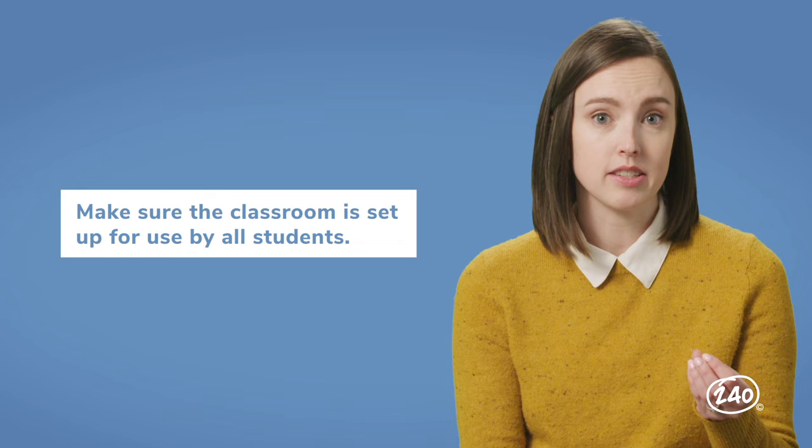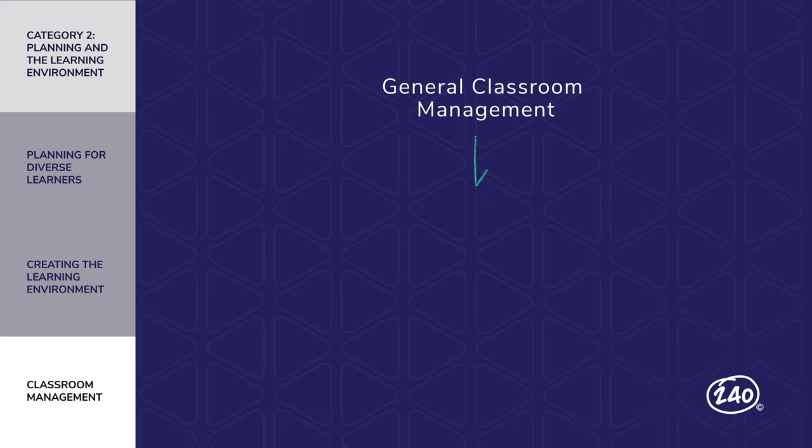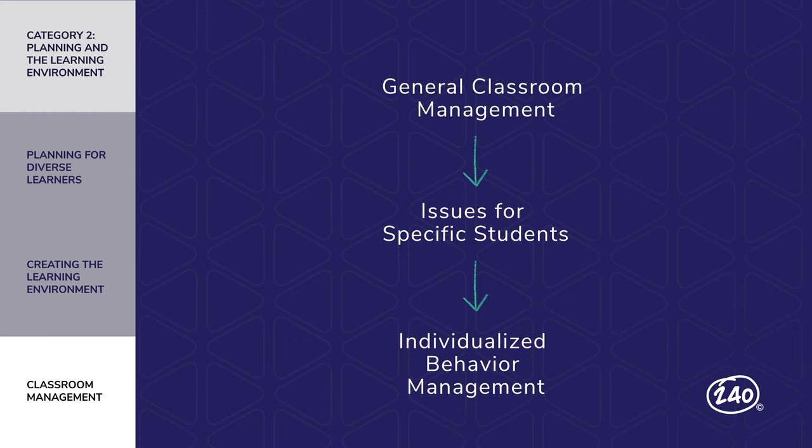Last but not least in Category 2 is classroom management. Classroom management questions show up on the test a lot. Just like the rest of Category 2, it's all about getting each student what they need. You need to know about general classroom management, but also think about how that approach might not work for students with special needs. For example, it may be part of your classroom management plan that no student may walk around the classroom while you're teaching a lesson.